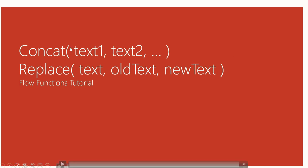Concat is a function that takes various parameters — there's no limit to how many you can use — and it just combines those different parameters together as a single string. Replace looks at a body of text, lets you say what part you'd like to replace, which is the old text, and then what you want to replace it with, which is the new text.